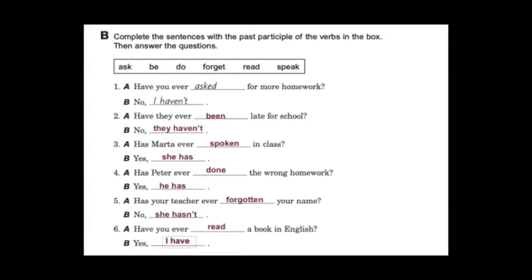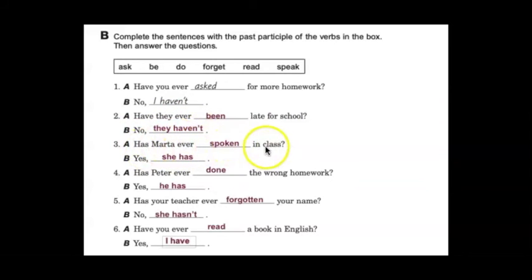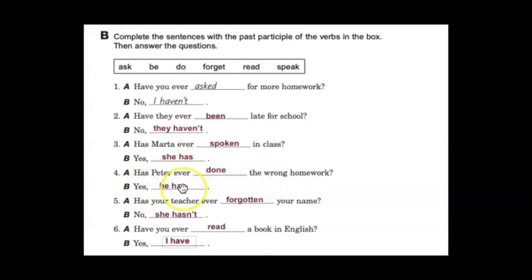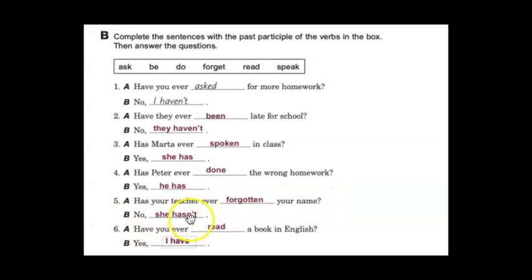Let's go over the answers. Number two: have they ever been late for school? No, they haven't. Number three: has Marta ever spoken in class? Yes, she has. Number four: has Peter ever done the wrong homework? Yes, he has. Number five: has your teacher ever forgotten your name? No, she hasn't.